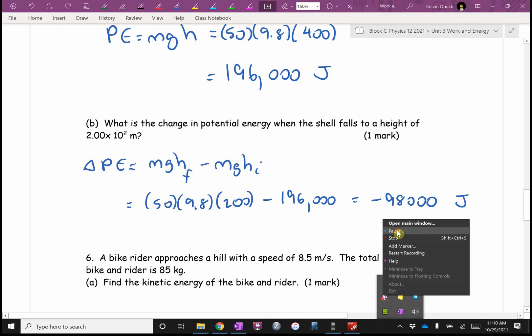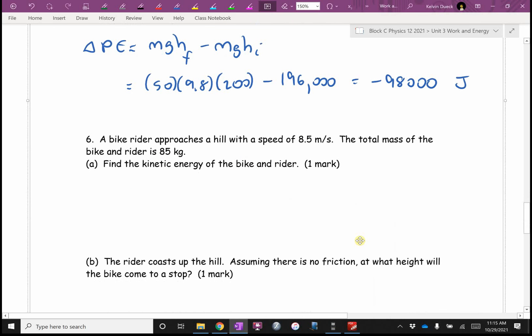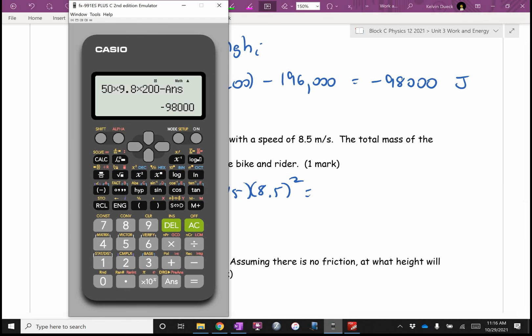Kinetic energy. Okay, KE equals a half mv squared. It's going to be 0.5 times 85 times 8.5 squared. Don't forget the squared. 0.5 times 85 times 8.5 squared, you get 3,070.